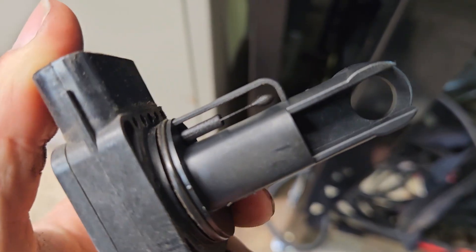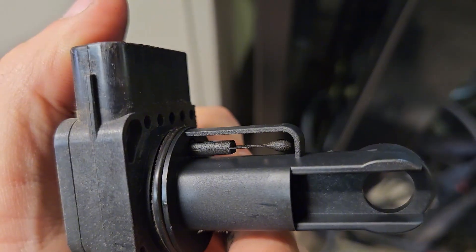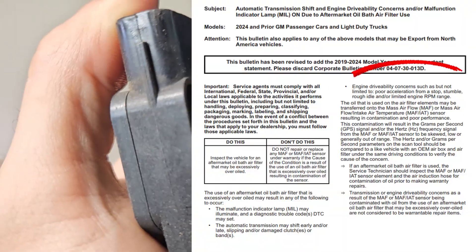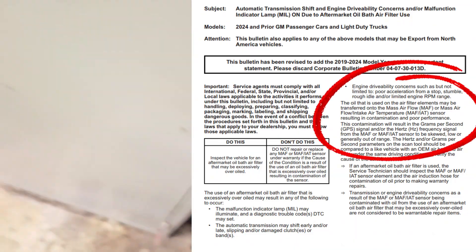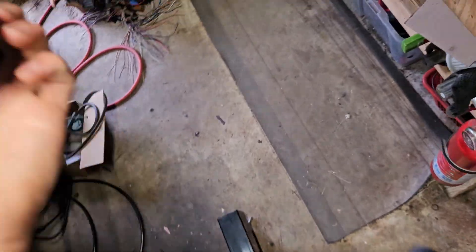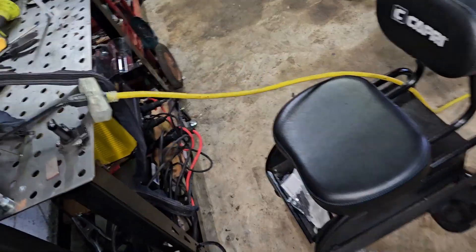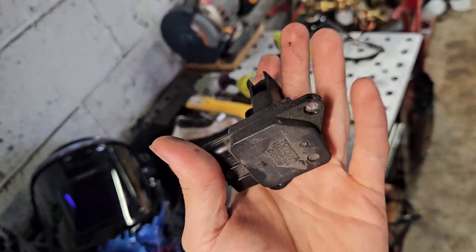So I may have to check if the air filter is one of those oiled air filters because there was a TSB a while back. I believe it was on a Honda where those oiled air filters, if they're over oiled, or even if they're just cheap quality, they'll send contamination down and they'll start killing MAF sensors like crazy.